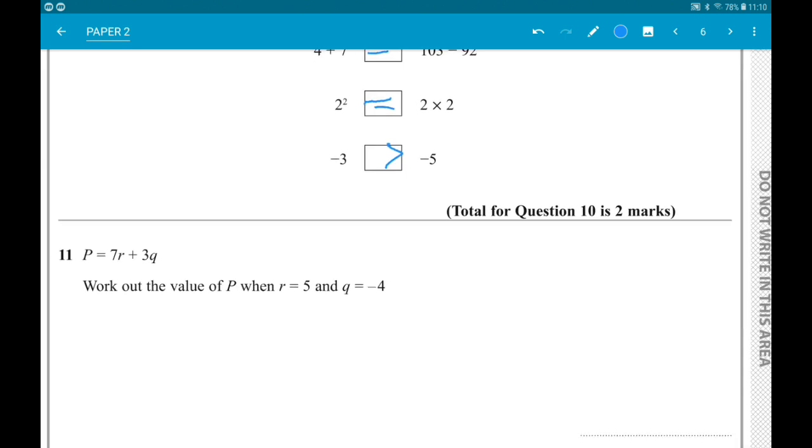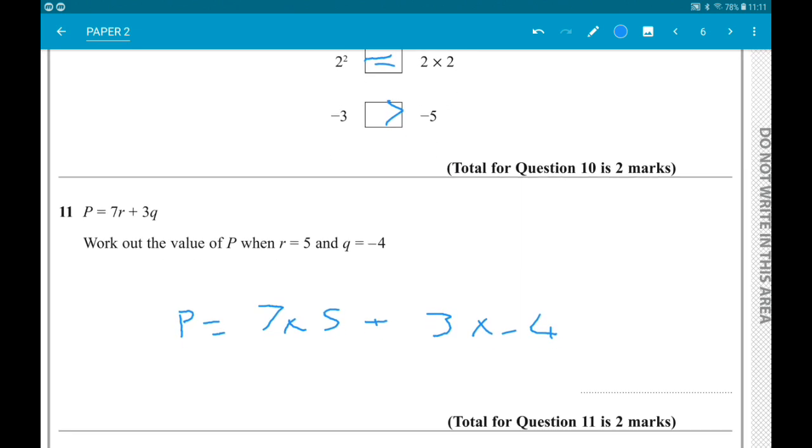Number 11: P is 7R add 3Q. Work out the value of P when R is 5 and Q is minus 4. So P is 7 times 5 add 3 times minus 4. Seven times five is 35, three times minus four is minus 12, so we have 35 minus 12, which is 23.